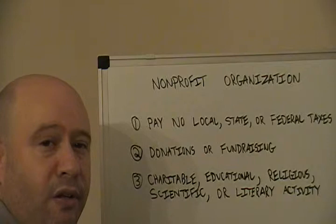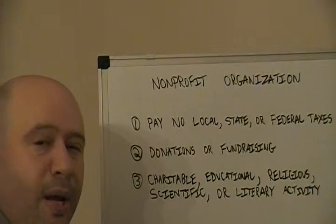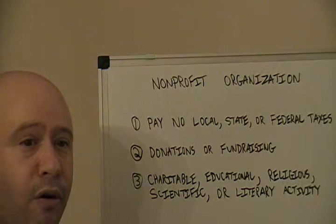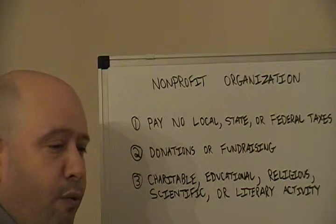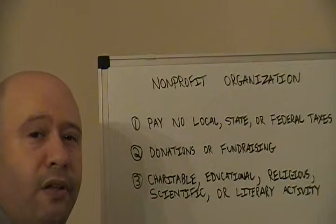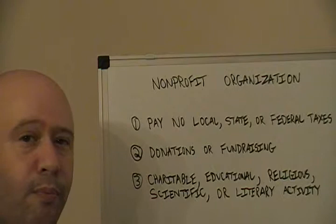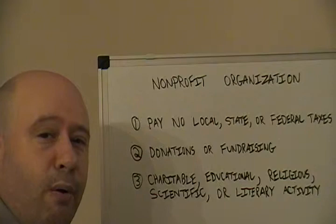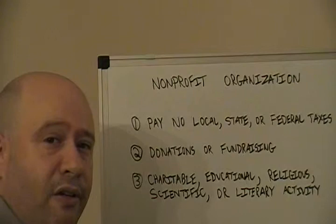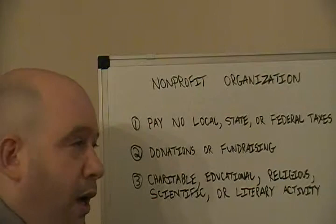One example is Greyston Bakeries, based out of Yonkers, New York. They have a bakery that employs people who are hard to employ — some have criminal records, are former drug addicts, and so forth. They use the profits from the bakery to help fund substance abuse programs, literacy programs, and computer training. They do get taxed on that revenue from the bakery by the government.